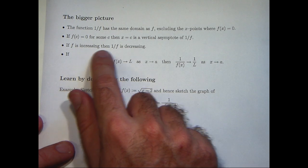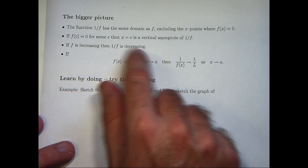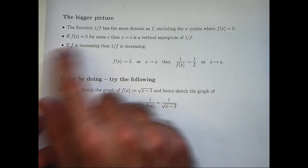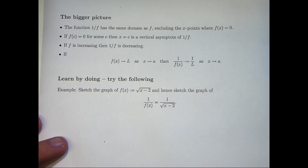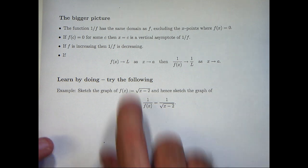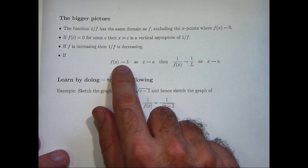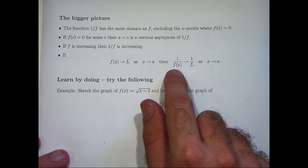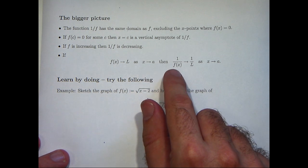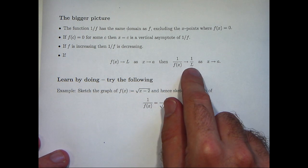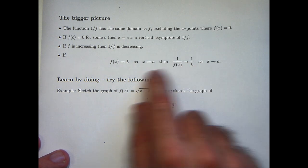If f is increasing, then 1 on f is decreasing. And if f is decreasing, then 1 on f is increasing. And finally, something about limits. If f of x approaches l as x approaches a, then the reciprocal function approaches the reciprocal limit as x approaches a.